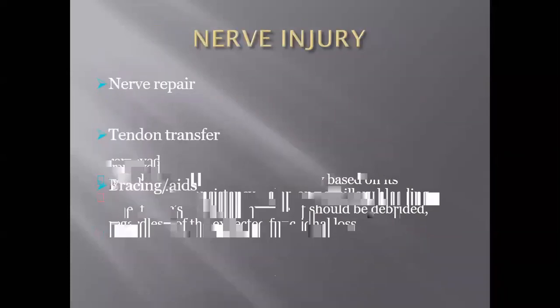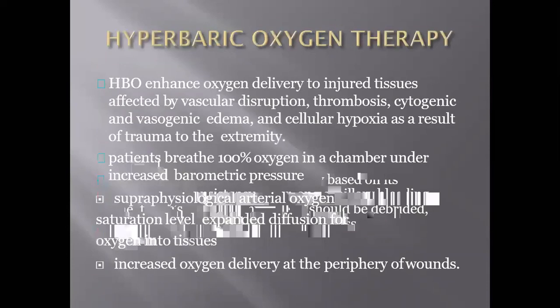Nerve injury can be managed by nerve repair; if nerve repair is not possible, we can go for tendon transfer and bracing aids. Regarding hyperbaric oxygen therapy — in mangled extremities there will be severe vasospasm secondary to injury, causing reduced oxygen supply to the peripheral zones of injury, which can be prevented by giving hyperbaric oxygen therapy.